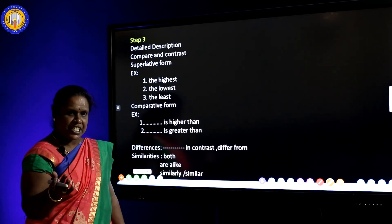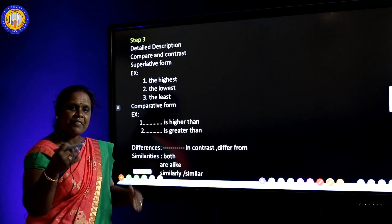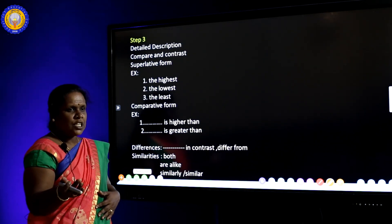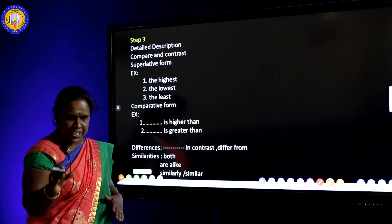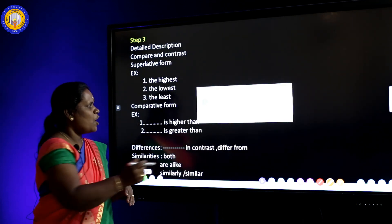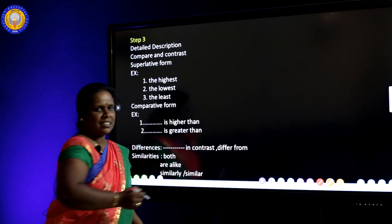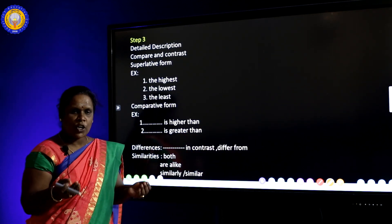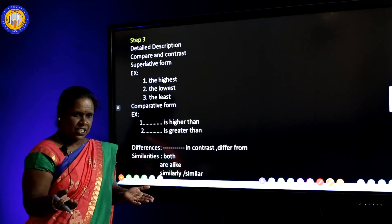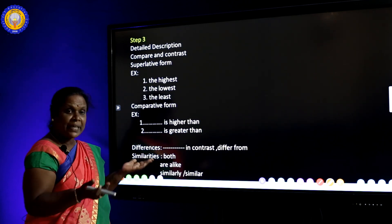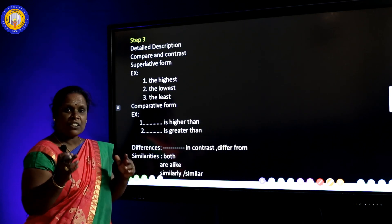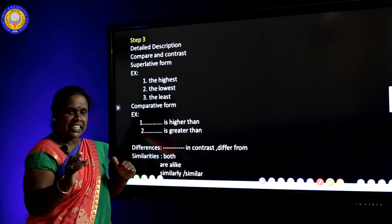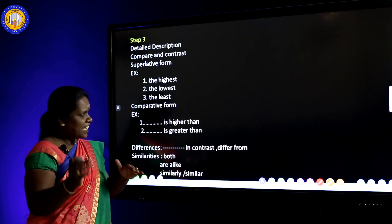Step 3 — we have to give the detailed description. We have to use the superlative and comparative form. Superlative form is used when we compare more than two things. For example: 'the highest', 'the lowest', 'the least'. When using the comparative form — when comparing two things — we can use: 'is higher than', 'is lower than', 'is greater than'.